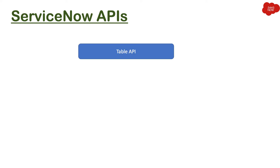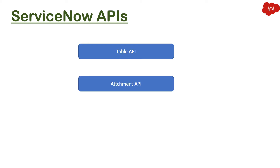ServiceNow comes with different out-of-the-box APIs so that different consumers can connect to it. One of those APIs is the Table API, which allows you to connect to different tables of ServiceNow and create, read, update, or delete data.